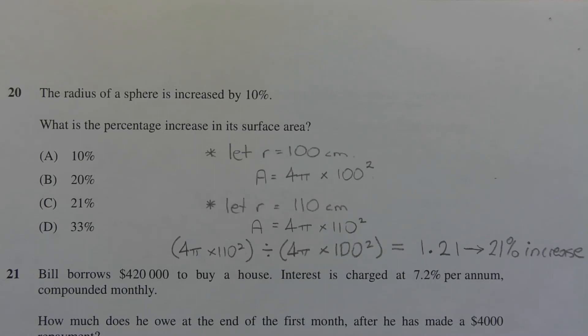Now let's work out the percentage increase from this surface area to this surface area. And we get that by dividing this value, 4 pi times 110 squared, by this value here, 4 pi times 100 squared.